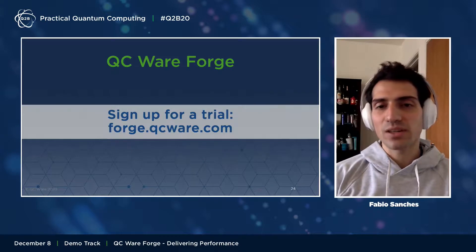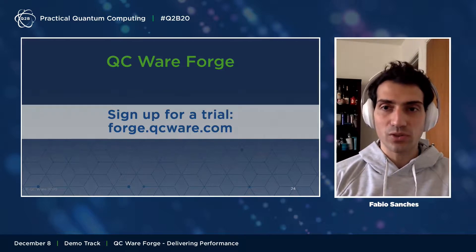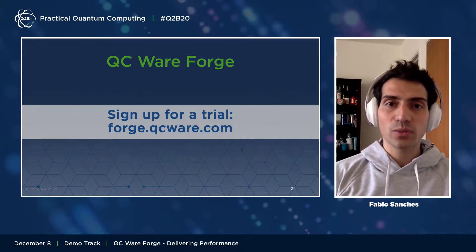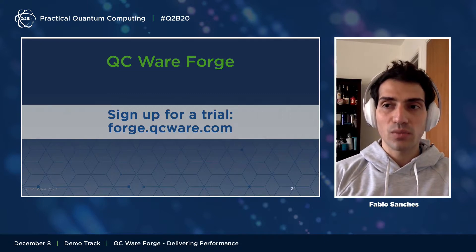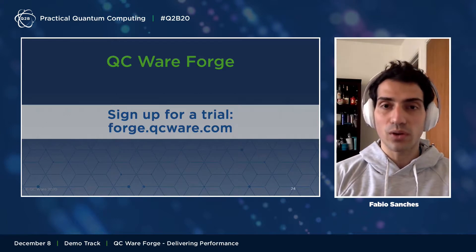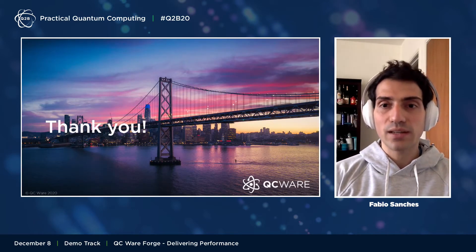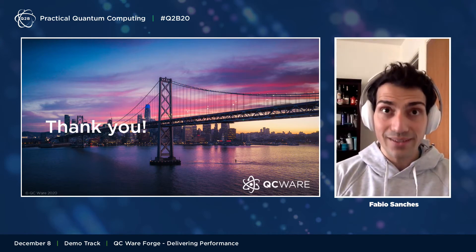Thanks again to Sean and Natalie for the demos. It's extremely easy to use GPUs to simulate circuits using Forge — everything is provisioned for you and easy to use. That's it for our demos today. Anyone can sign up for a trial at forge.qcware.com. The trial account gives you enough time to test out all these features. We encourage you to do so, and if you have any feedback, feature requests, or thoughts, please reach out — we're always happy to hear what the community wants to see.